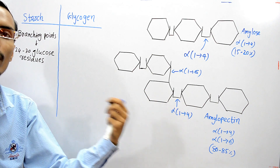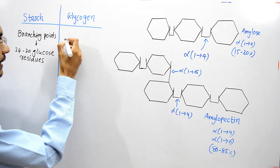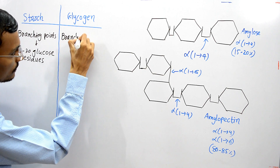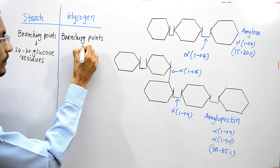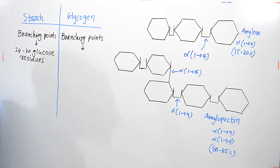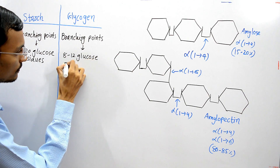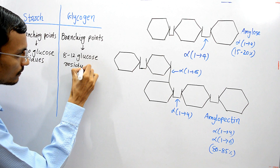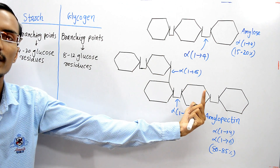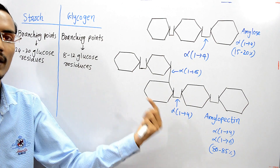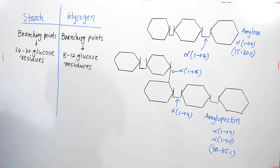In glycogen, which is similar to amylopectin but more branched, the branching points occur every 8 to 12 glucose residues. So after every 8 to 12 glucose residues there is one branching point, and then again after every 8 to 12 glucose residues there is the next branch.